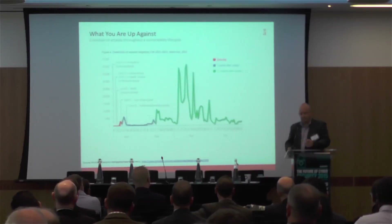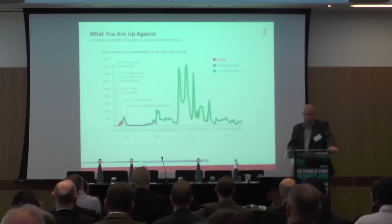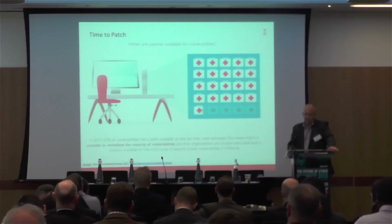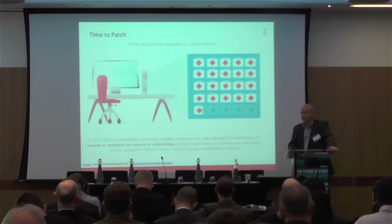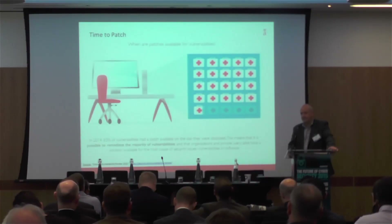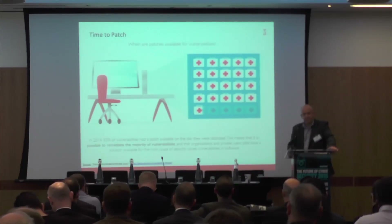The value of an exploit kit depends on what it enables - if it gives elevated privileges, that commands a significant price. You see huge spikes of activity after disclosure. That blue line - day of disclosure - is important: 83% of all vulnerabilities last year had a patch available at day of disclosure. So there wasn't much in the zero-day sphere to worry about - what you had to worry about was doing the basics and making sure you'd covered off that 83%.